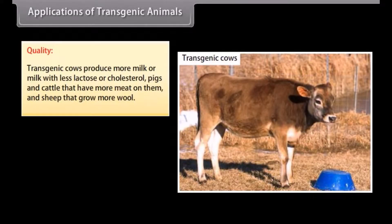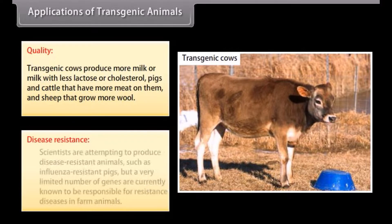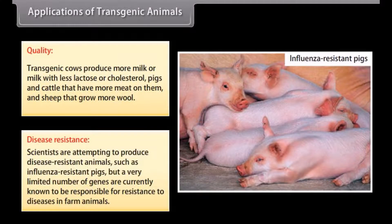In terms of quality, transgenic cows can produce more milk or milk with less lactose or cholesterol, and pigs and cattle can have more meat on them while sheep grow more wool. For disease resistance, scientists are attempting to produce disease-resistant animals such as influenza-resistant pigs, but a very limited number of genes are currently known to be responsible for resistance to diseases in farm animals.